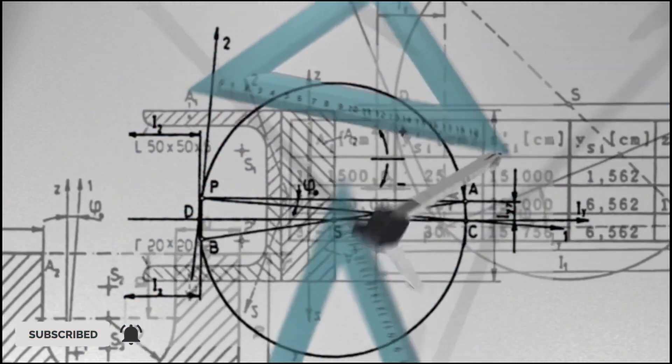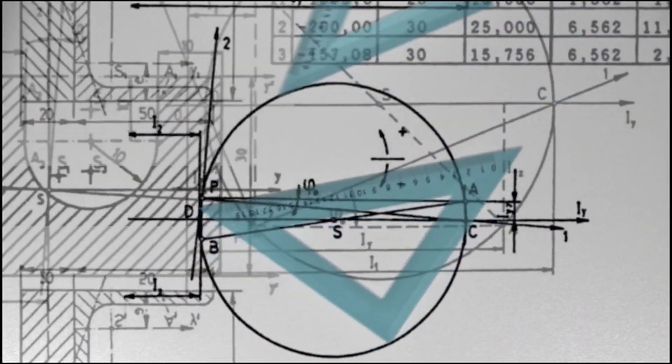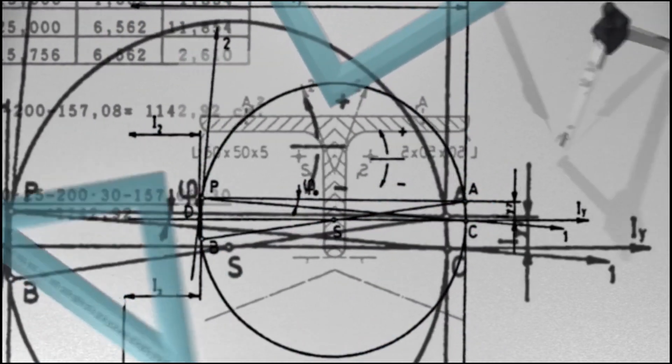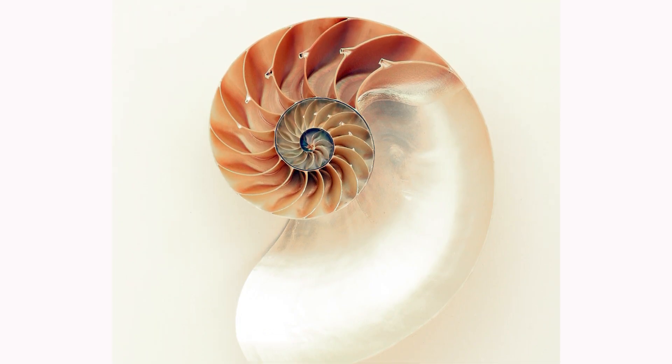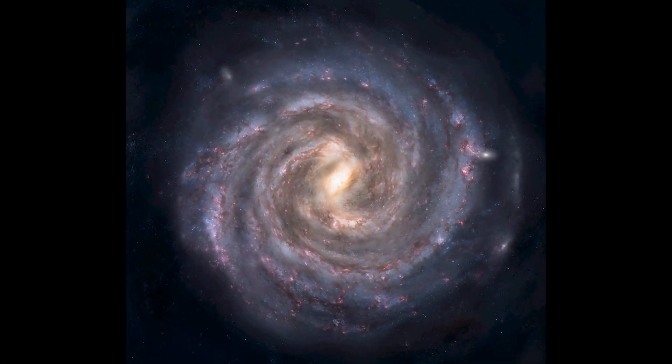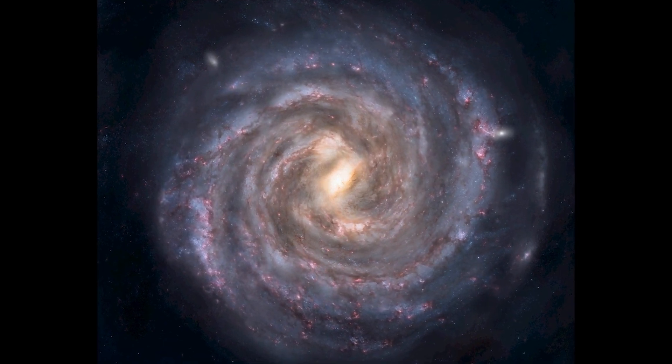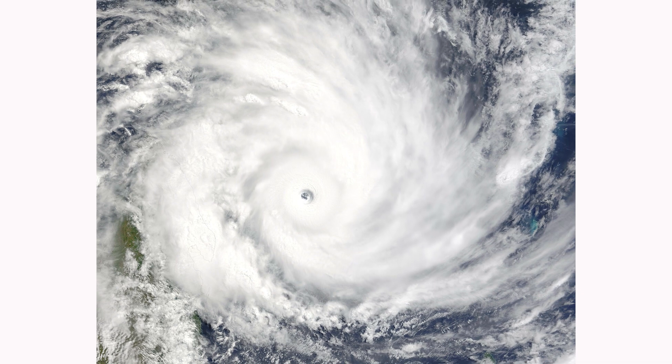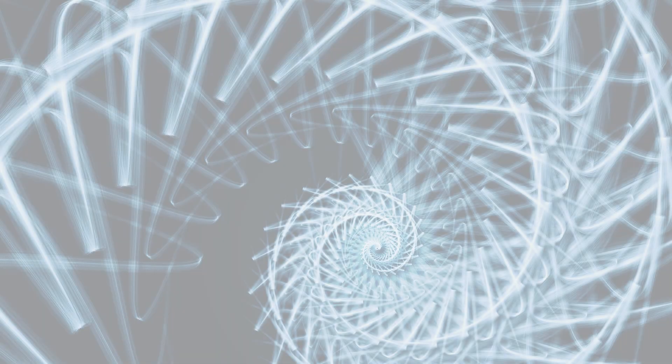No matter where you are in the universe, 1 plus 2 will always be 3. Everything in the universe follows certain rules. There are patterns that naturally occur in the universe. Patterns we have discovered in life, galaxies, star formations, evolution, and almost all natural systems. Some of these patterns are the golden ratio and sacred geometry.